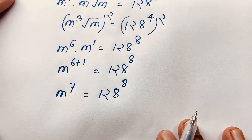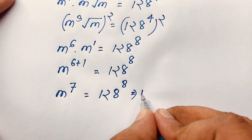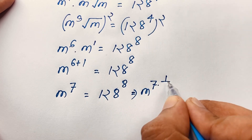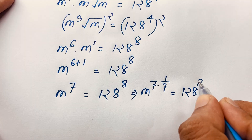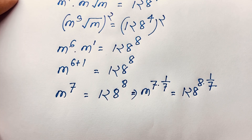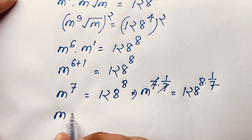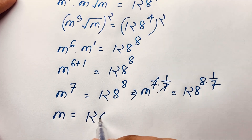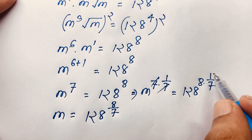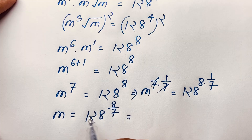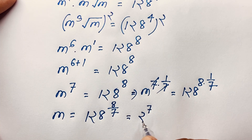Now to find the value of m, I use both sides to the exponent 1 over 7. So 1 over 7 applied to both sides — these cancel and we find m equals 128 to the power 8 over 7, because 8 times 1 over 7 equals 8 over 7. Now 128 equals 2 to the power 7, as we know.